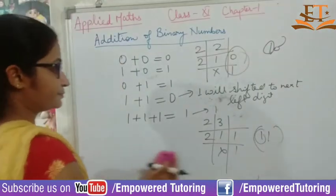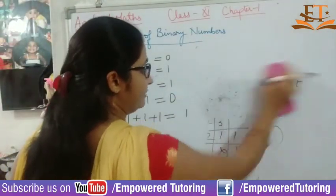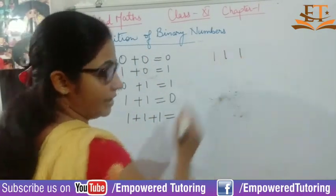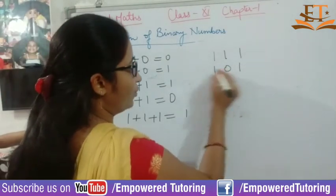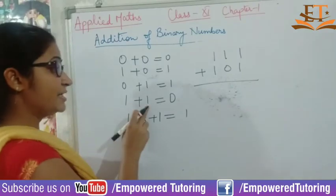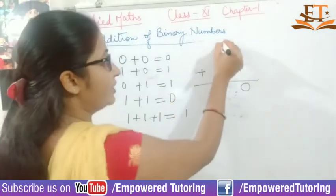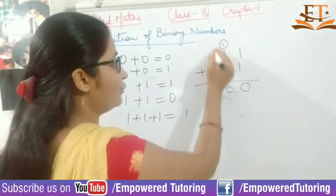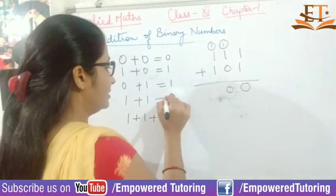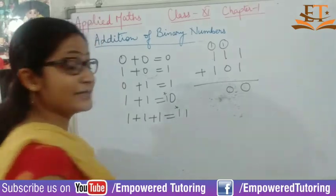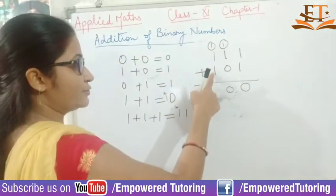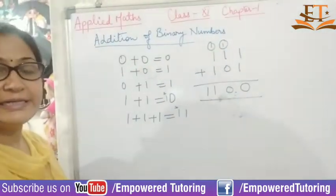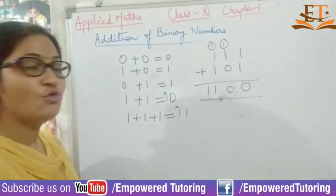Let's see how we are going to add with a few examples. Here I have 111 and I have to add 101. 1 plus 1 gives you 0, and 1 is carried. Again, 1 plus 1 gives you 0 and 1 is carried — I am marking with an asterisk so you understand it is carried over. Then 1 plus 1 plus 1 — since there is no other digit for the carry, simply write 11. So here you get 1100 when you add these two binary numbers.